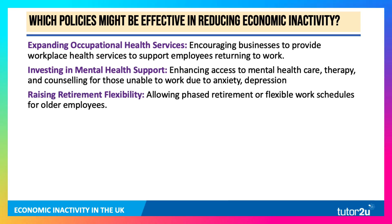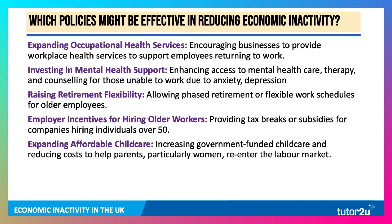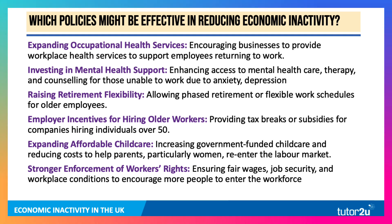You might make it easier and more flexible to retire — allowing phased retirement or flexible work schedules for older employees — and reform pensions so people can continue working without it affecting their pension. Give employers incentives for hiring older workers, such as wage subsidies for companies hiring individuals over 50. Crucially, increasing female participation by expanding government-funded childcare and reducing costs for parents, and improving workers' rights. Some people are inactive because work does not pay, so ensuring fair wages through higher minimum wages, reinforcing job security and workplace conditions, to address the poverty trap and the benefits trap.